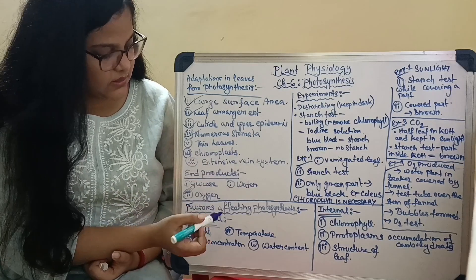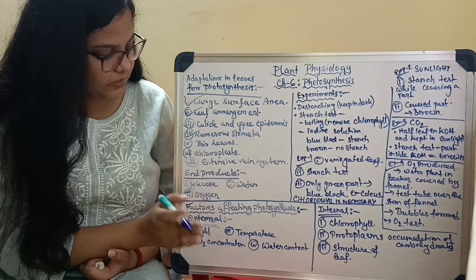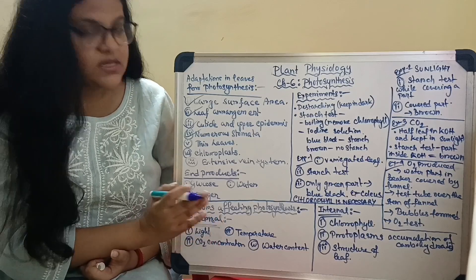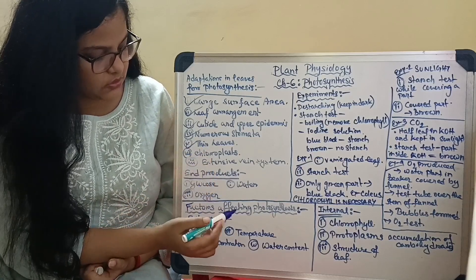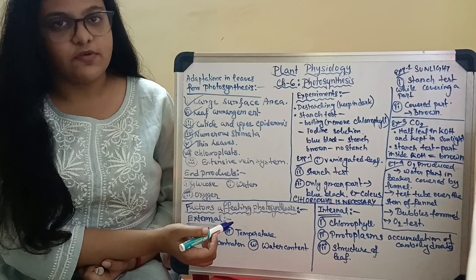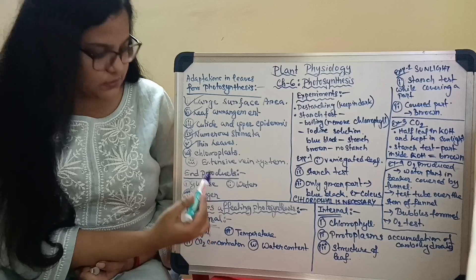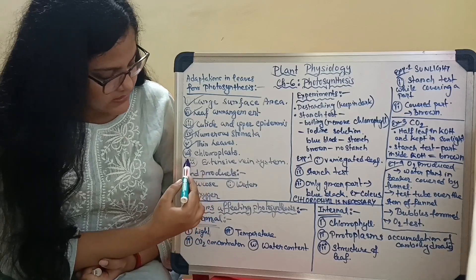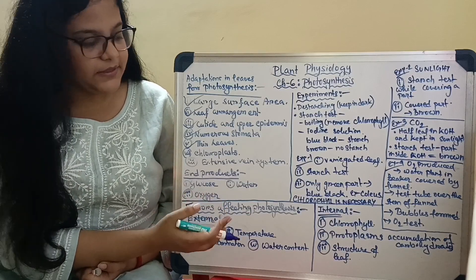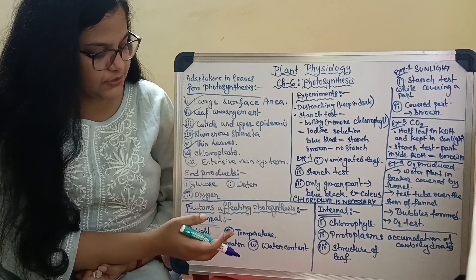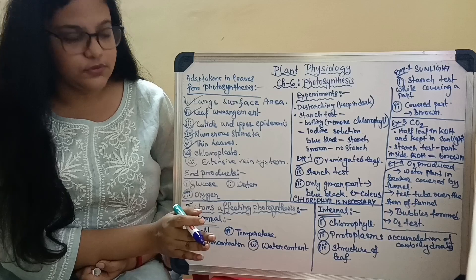Next is thin leaves: the thinner the leaves, the easier the transport of products formed in photosynthesis, hence faster photosynthesis. Next comes the presence of chloroplast: chloroplasts are the units of photosynthesis, so their presence in leaves helps in photosynthesis. Finally, an extensive vein system helps in better and proper transportation of the products formed in photosynthesis.